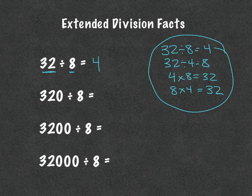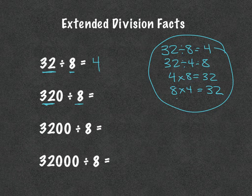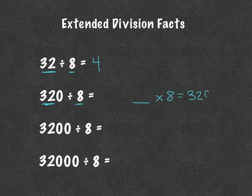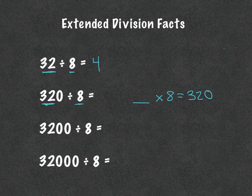So 32 divided by 8 is 4. We're going to use that fact and build upon it. So we have 320 divided by 8. What times 8 would equal 320? When we think about our extended multiplication facts, we can remember that 40 times 8 would be 320. So the answer is 40. Remember, 4 times 8 is 32, and it's 10 times bigger, so we have an extra zero.